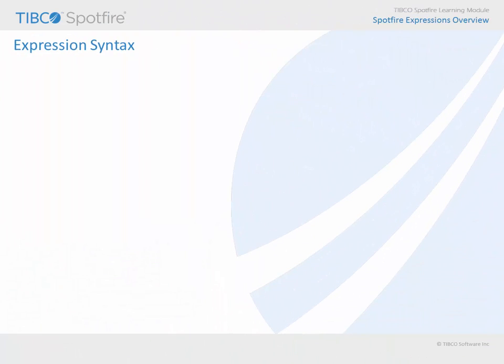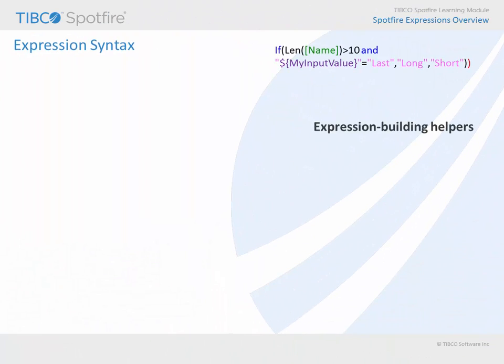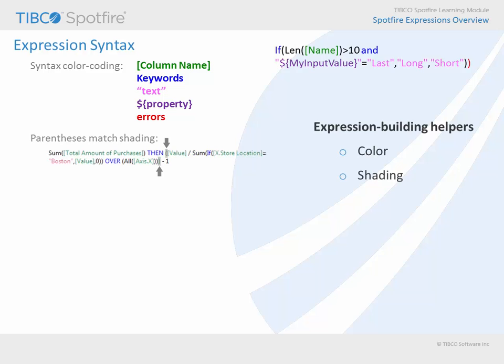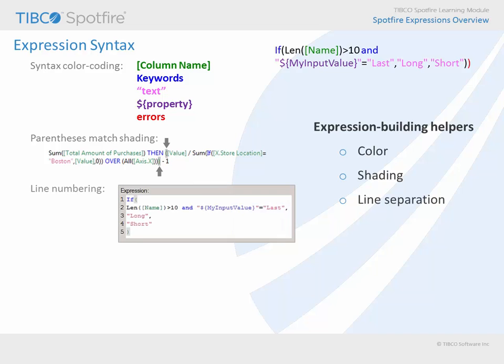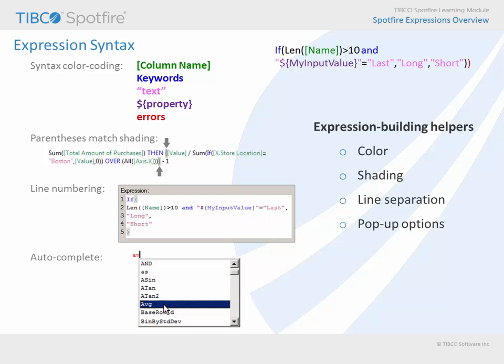As you begin the process of editing or creating your own expressions, bear in mind that Spotfire includes expression building helpers which present themselves when you are working within the various expression dialogues. Different components within an expression will be colored differently, and shading will occur to indicate open and close parentheses which match. You can separate an expression onto multiple lines in order to make it easier to read without any impact on the result. And as you type, watch for intelligent pop-up dialogues which will attempt to determine if you are typing a function, column name, or property, and give you options to complete what you have started. Finally, an exclamation point alert will indicate that there is an error somewhere within your syntax, and may even provide some useful hints for correcting that error when you mouse over the alert icon.